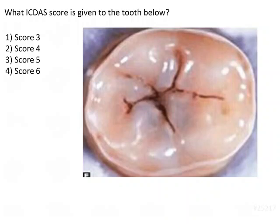What ICDAS score is given to the tooth shown here? You can see there is carious involvement for sure — there is dark discoloration, and at the same time you can see intact enamel along with a blackish shadow, which is called the dentinal shadow. We will come back to this.